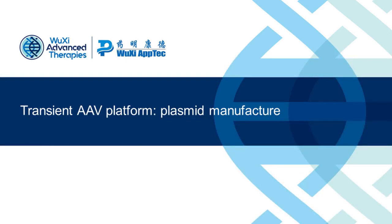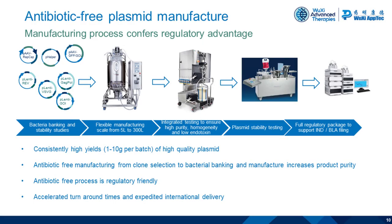Moving on to how the plasmid is manufactured — this manufacturing process is carried out at WuXi Advanced Therapies in China. All plasmid manufacturing is carried out in an antibiotic-free fashion. We can consistently generate yields of one to ten grams per batch, depending on the size of the bioreactor, of high-quality plasmid DNA. Being antibiotic-free has additional regulatory benefits. We're also trying to provide these plasmids to clients as quickly as possible, working hard to improve turnaround times and expedited international delivery.